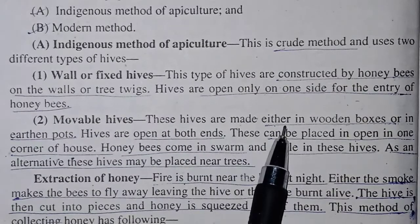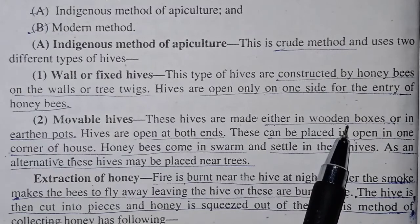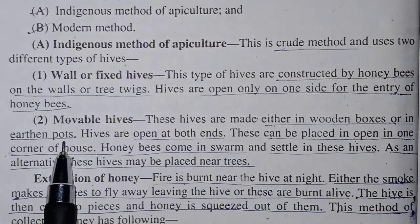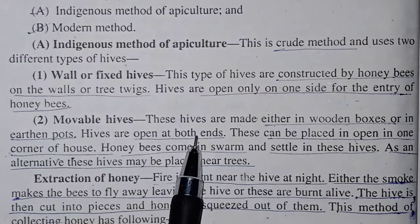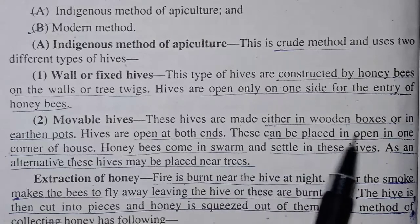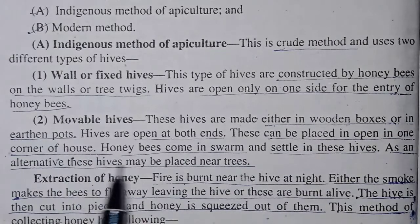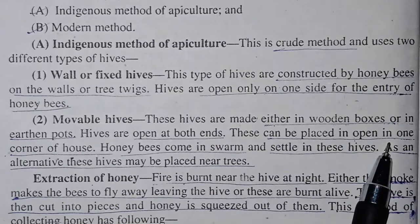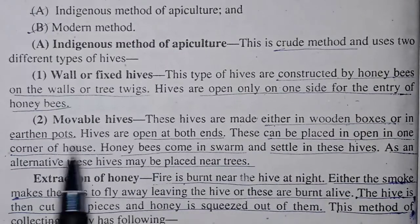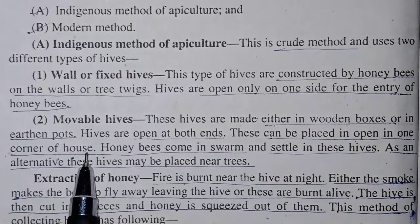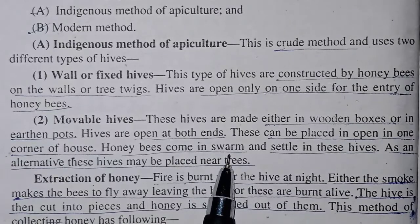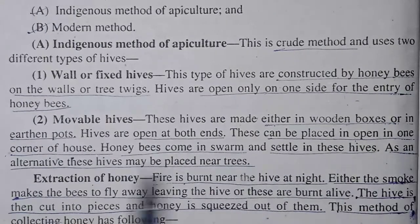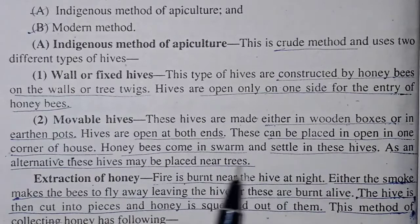The second type is the movable hive. This hive is made in wooden boxes or in an earthen pot, and is open at both sides. These can be placed in an open corner of the house or in open areas. Honey bees come and settle in these hives. Alternatively, these hives may be placed near trees.